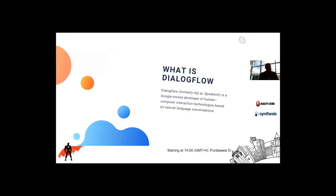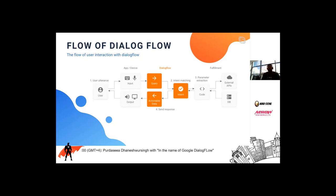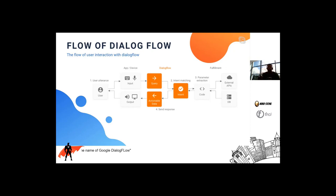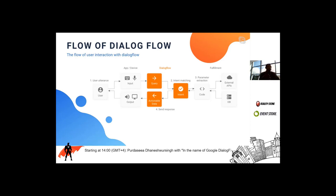How does Dialogflow work? We have our user and our device. There are two ways to interact with your agent: text-to-speech and speech-to-text. The agent understands both ways to interpret input, matches the intent of what you're saying, extracts keywords, and replies with the correct answer. The more you talk to your agent, the better it will understand you — it becomes smarter over time.